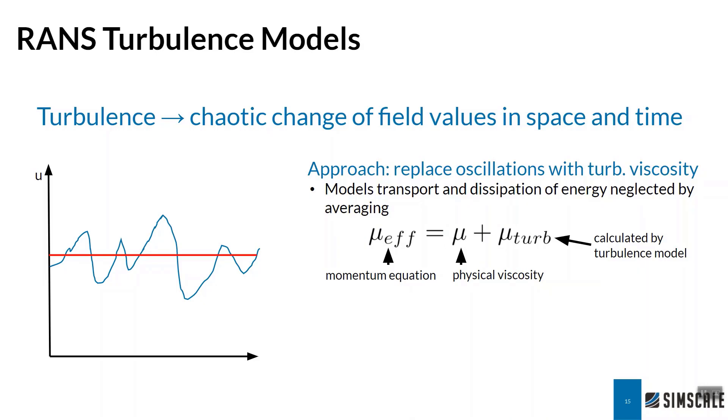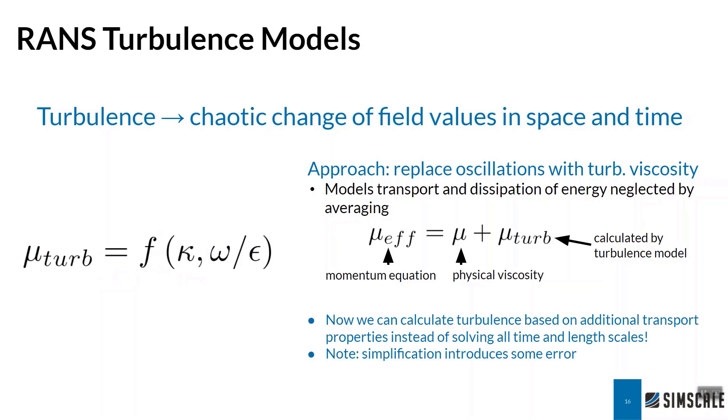And this turbulent viscosity or thermal conductivity, whatever it may be, is modeled by our turbulence model. Typically we track two equations, or two scalars, the turbulent kinetic energy denoted as k, and some form of destruction of that energy, whether it is omega or epsilon. And we can now add two new equations to our overall solution, and rather than having to solve all the additional chaos, we can just solve for the average properties. Note that this of course does introduce some error into our simulation, as it is a simplification, but typically under the right circumstances it is quite minimal.